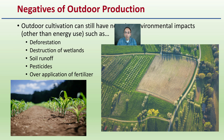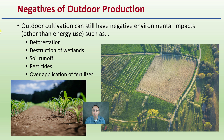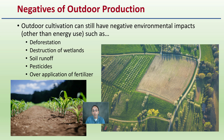Outdoor cultivation still has some negative environmental impacts beyond energy use. It can result in deforestation, destruction of wetlands, soil runoff, pesticide use, and over-application of fertilizers. So outdoor production is not free of potential negative impacts, but overall they can be less significant compared to the carbon footprint of indoor cannabis production. As consumers, you're driving the market — if you are demanding indoor production, keep in mind the side effects that come along with that production process.